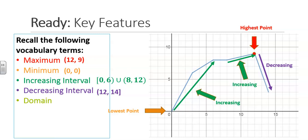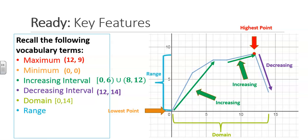The domain of this function is all of the x values. In this case, our x values are 0 to 14. The range will be all of the y values. This function has a range of 0 to 9. The x-intercept is where the function is crossing the x-axis. In this case, the x-intercept is at the point (0, 0).